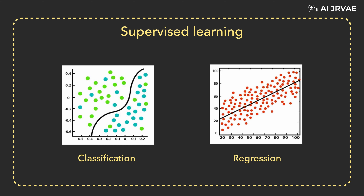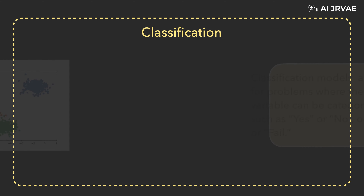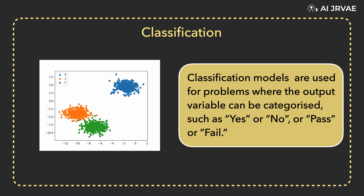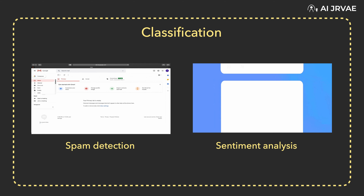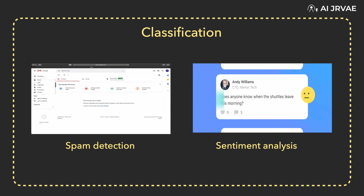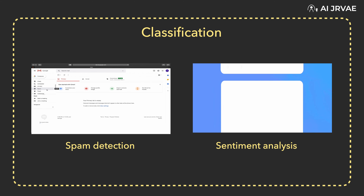All supervised learning algorithms are essentially complex algorithms categorized as either classification or regression models. Classification models are used for problems where the output variable can be categorized, such as yes or no, or pass or fail. Classification models are used to predict the category of the data. Real life examples include spam detection, sentiment analysis, etc.